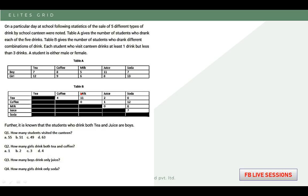Table B gives the number of students who ranked different combinations of drinks — exactly two portions. For example, tea and coffee equals 4, and tea and milk total equals 11. Table A gives exactly one portion plus exactly two portions, while Table B gives only exactly two portions. So in Table A, only tea plus combinations like tea+coffee, tea+milk, tea+juice, tea+soda are included — that is, one plus two combinations.